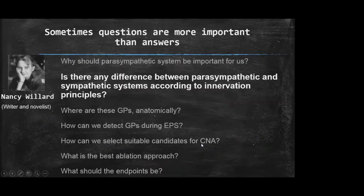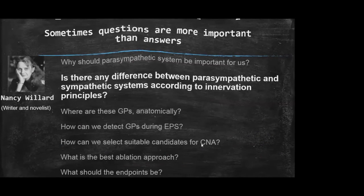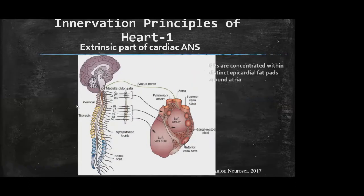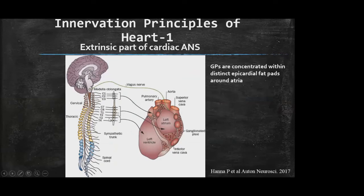There is a significant difference between parasympathetic and sympathetic systems according to innervation principles. We can divide the autonomic nervous system as extrinsic and intrinsic parts. The main difference between sympathetic and parasympathetic system is related to localization of postganglionic synaptic bodies. Postganglionic neuronal bodies are located in the stellate ganglia area, far from the heart, in the sympathetic system.